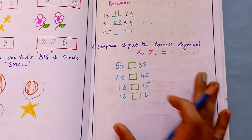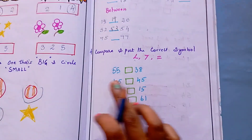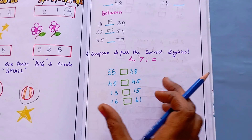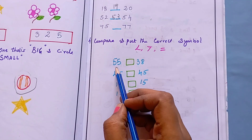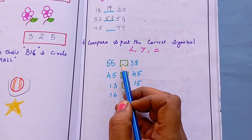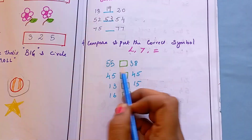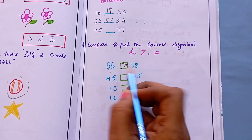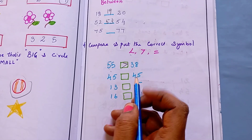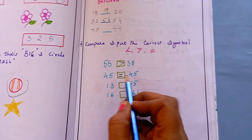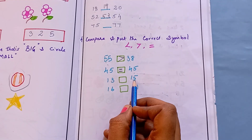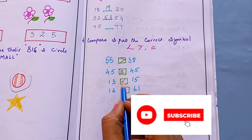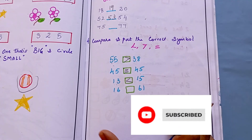The next question is: compare and put the correct symbol. Here I have given two numbers and the kid has to compare which is greater, smaller, or equal, and sign it. So this is 55 and 38 — 55 is greater than 38, so the kid has to put the greater than symbol. And this is 45 and 45, both are equal, so the kid has to write the equal symbol. This is 13 and 15 — comparing, 13 is smaller, so they have to write the lesser than symbol here. Like this, they have to complete this question.